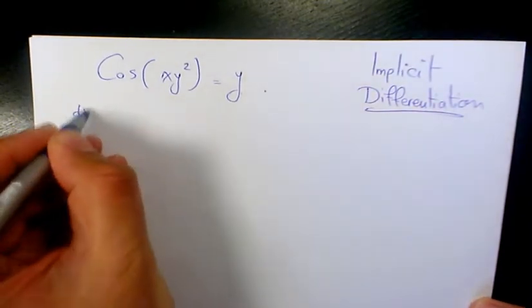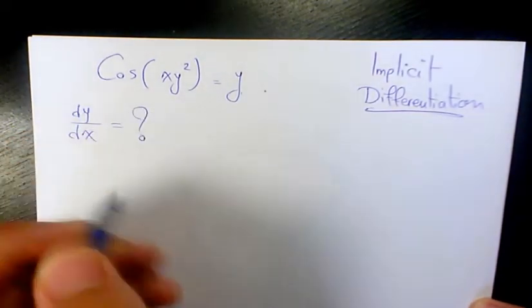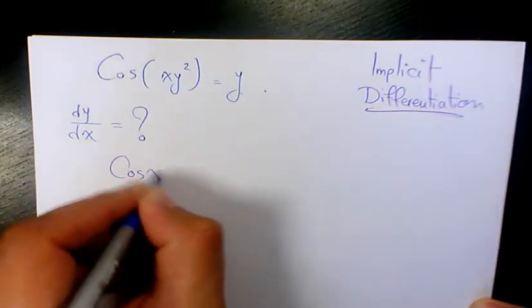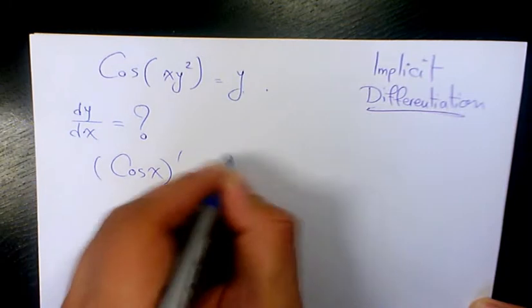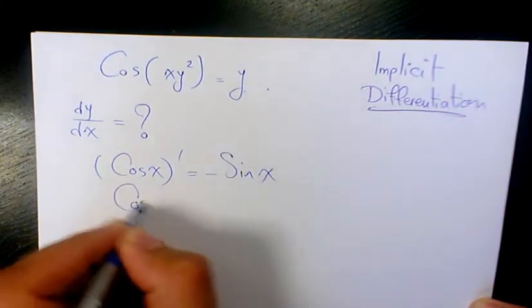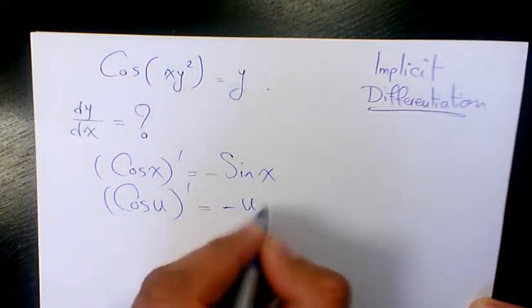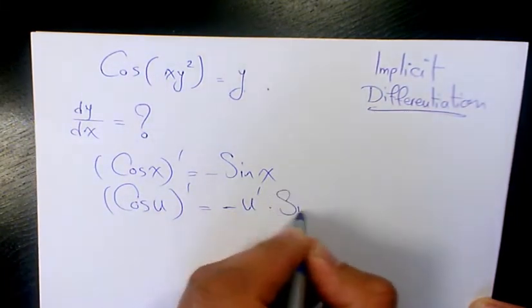So we need to find dy over dx and we need to use implicit differentiation. We know the derivative of cosine x is negative sine x. And the derivative of cosine u, when u is a function of x, is negative u prime times sine u.